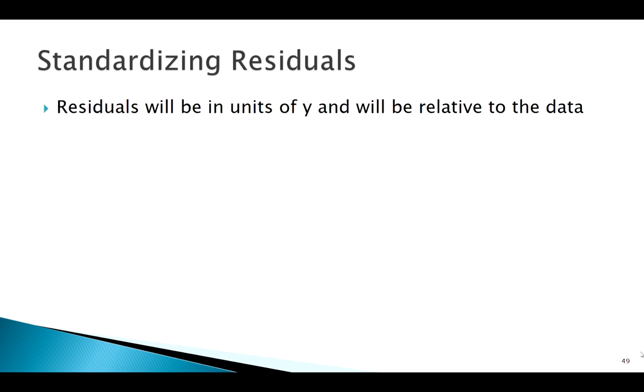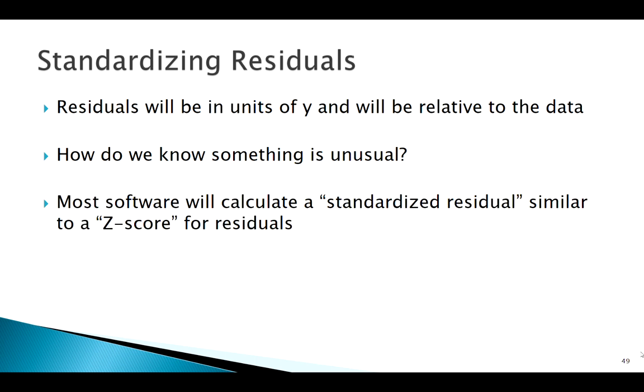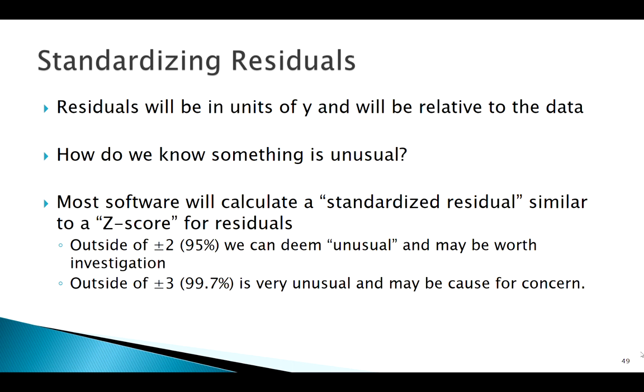Okay, so how do we know what is an important residual and what's not? Well, these residuals will be in the units of y. How do we know it's unusual? Well, most software will calculate what's called your standardized residual. And it's essentially a z-score for your residuals. And we know based on z-scores, the normal distribution, all that stuff, our empirical rule, anything outside of 95%, we might call unusual. So outside of two standard deviations or a z-score of plus or minus two. Anything outside of three, right, is very unusual, assuming normality.